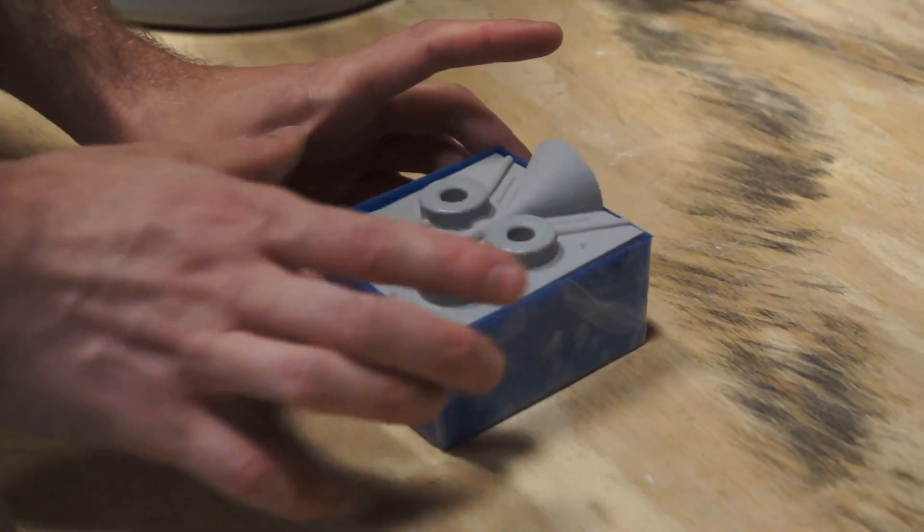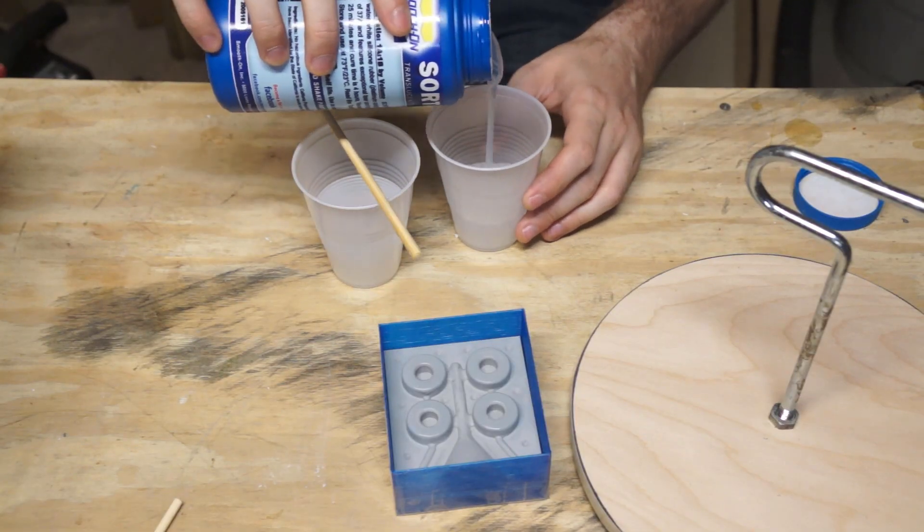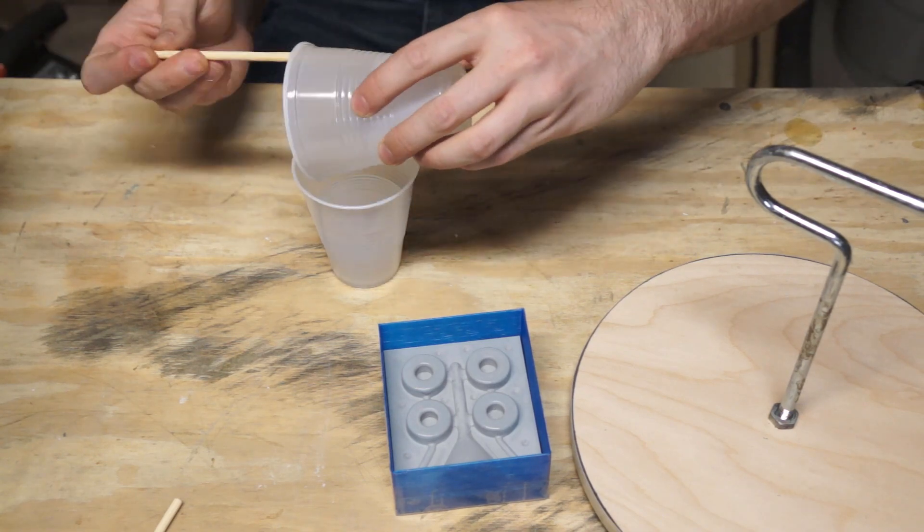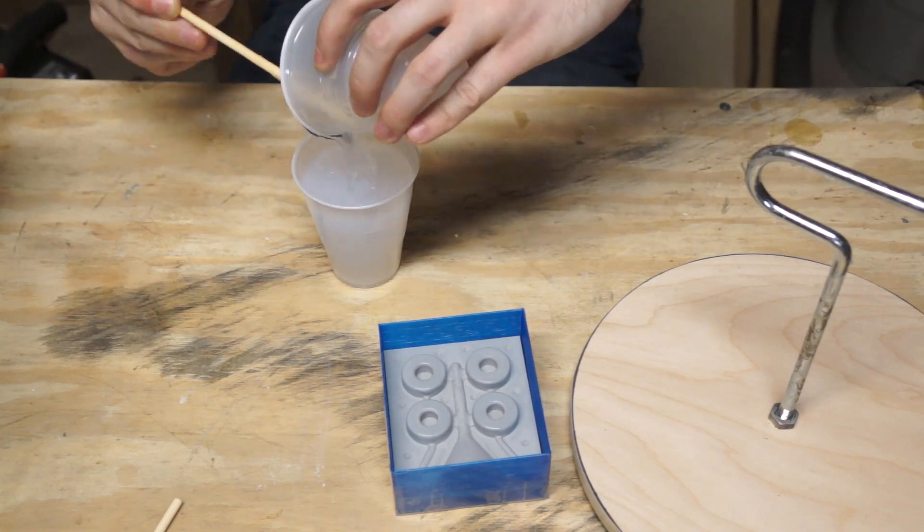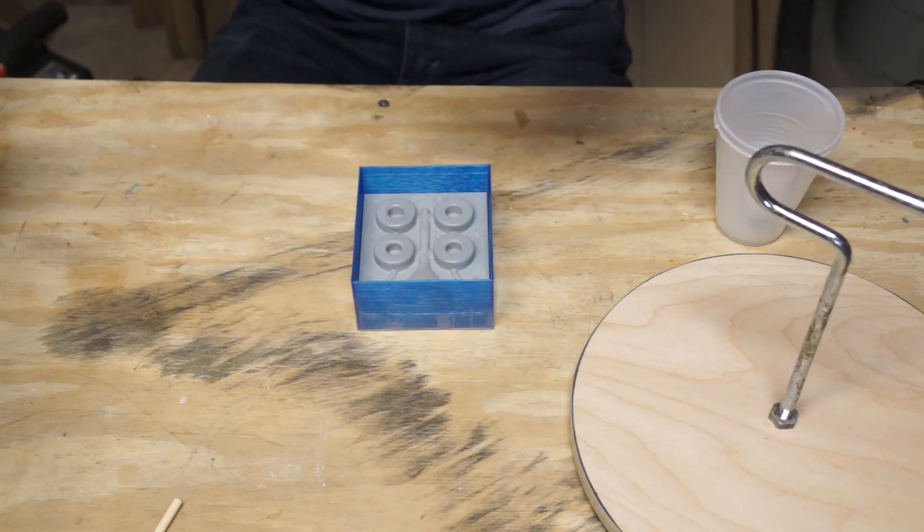I slid the mold half negative into the casting box, mixed up some silicone. I'm using Smooth On Sorta Clear 37 mostly because it's what I have around. I end up being pretty happy that I use this because I mean it looks cool. I poured my silicone over my printed negative.